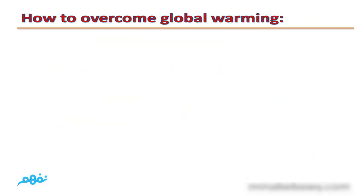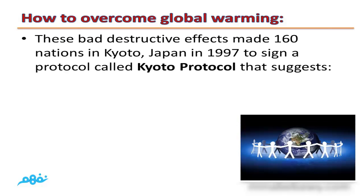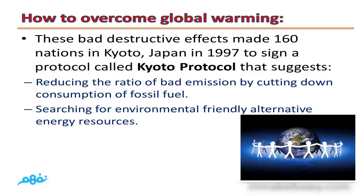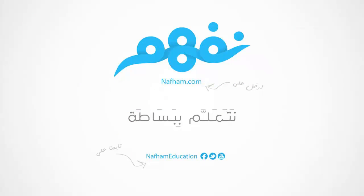These destructive effects led 160 nations to gather in Kyoto, Japan in 1997 and sign the Kyoto Protocol. This protocol suggests reducing the ratio of harmful emissions by cutting down the consumption of fossil fuels, and searching for environmentally friendly alternative energy resources. This is the end of lesson two.